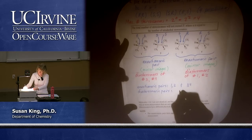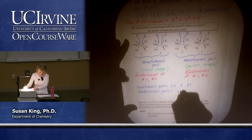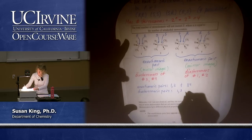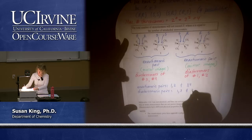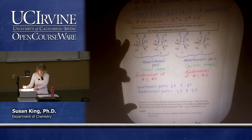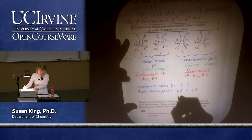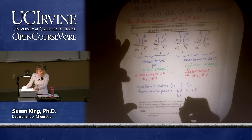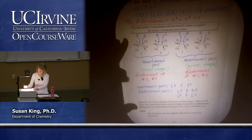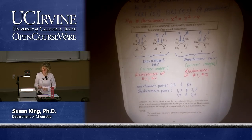Diastereomeric pairs: we could have 1 and 3, we could have 2 and 3, we could have 1 and 4, and we could have 2 and 4. Those are all diastereomeric pairs.